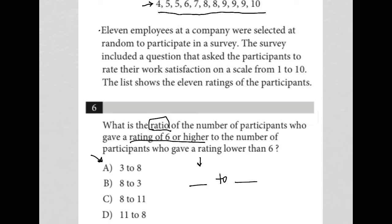The number of participants who gave a rating of 6 or higher. Well, how many participants gave a rating of 6 or higher? That's 1, 2, 3, 4, 5, 6, 7, 8. So that means 8 goes here in the first position.